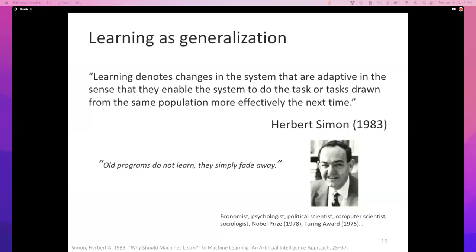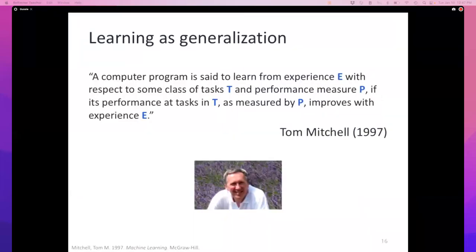Herbert Simon was a polymath — the only person of our species to have received both a Nobel Prize and a Turing Award. A more well-formed definition for machine learning comes from Tom Mitchell's textbook: a computer program is said to learn from experience E, with respect to a collection of tasks T and a performance measure P, if its performance on the tasks improves as measured by P with the experience E. It's a complicated sentence — let me break it down.